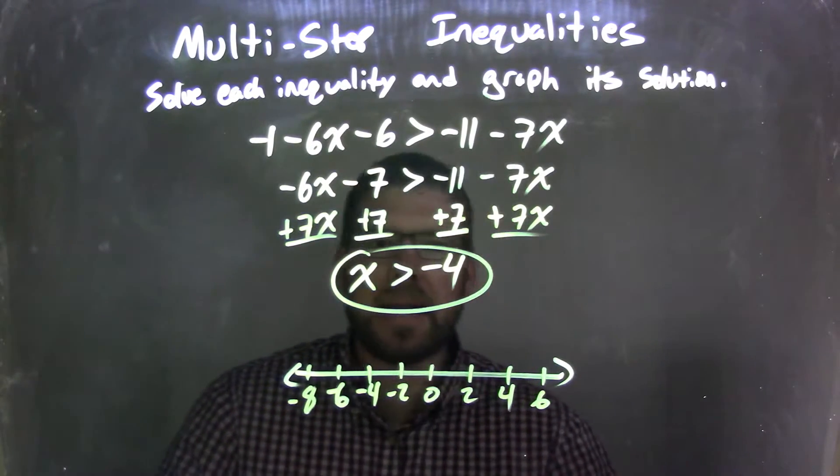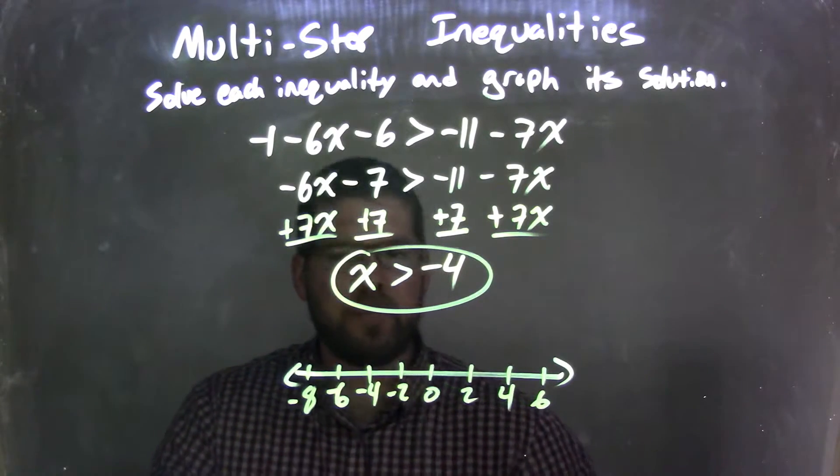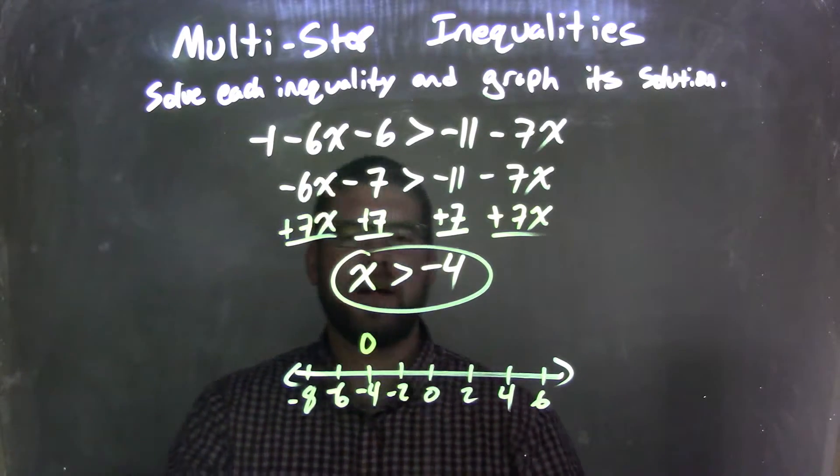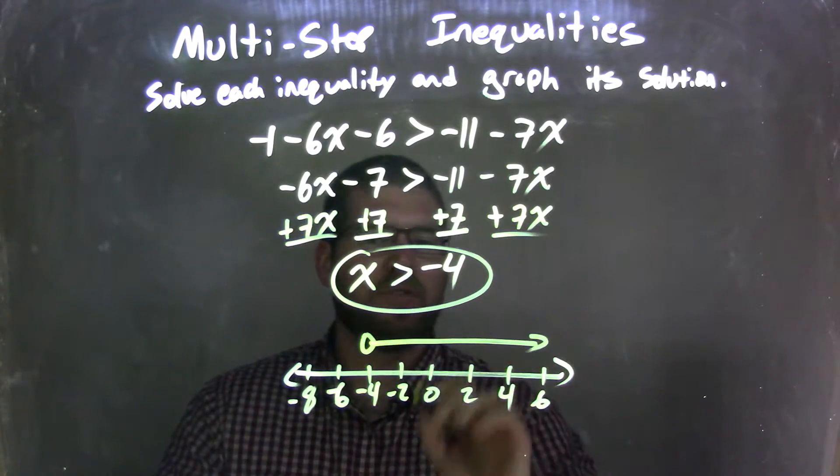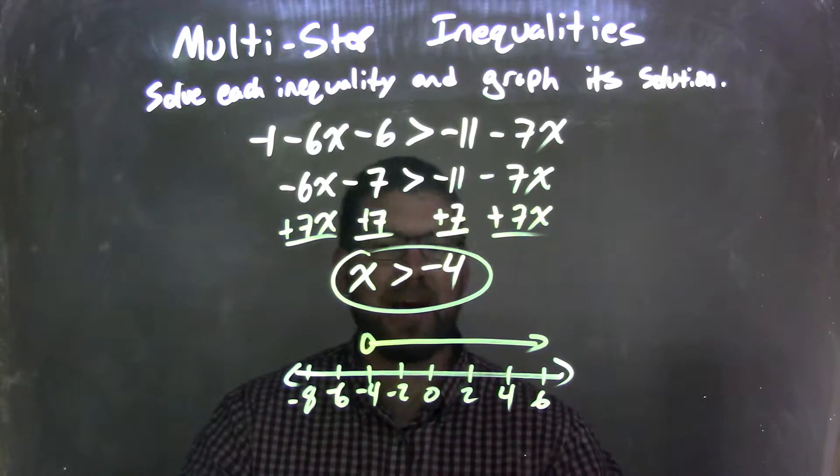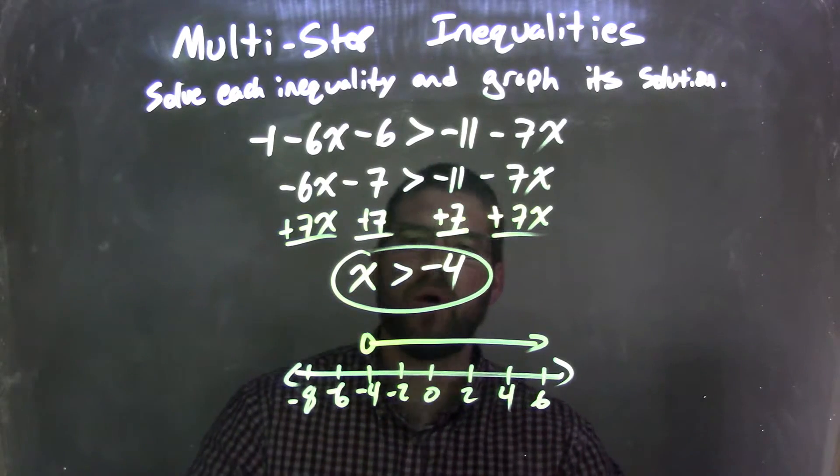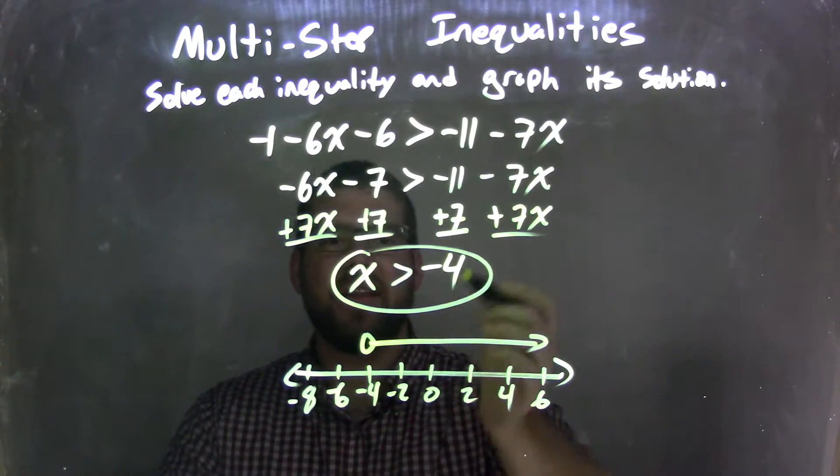So we said x is greater than negative 4. Well, it's not equal to negative 4, it's just greater than. So I have an open circle at negative 4. Then I need to put my arrow to the right because we said x was greater than that negative 4. And now we have it. We have our graph here that matches our inequality, which is x is greater than negative 4.